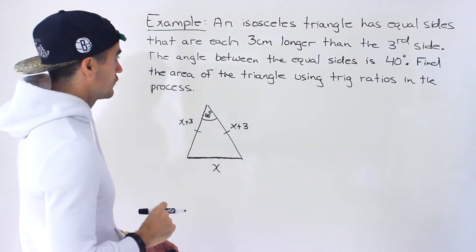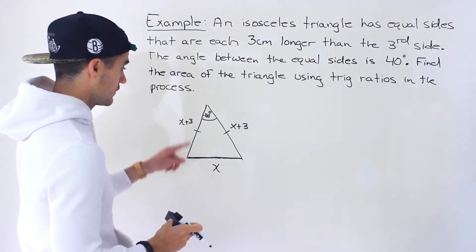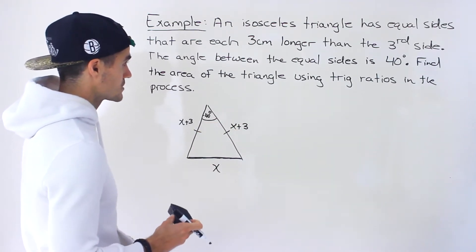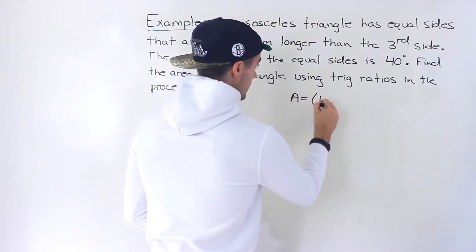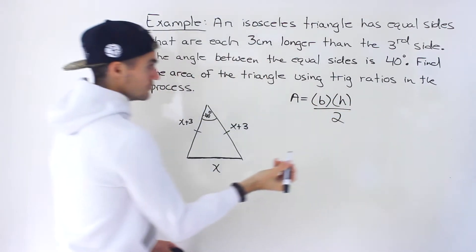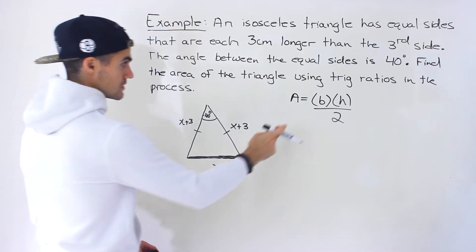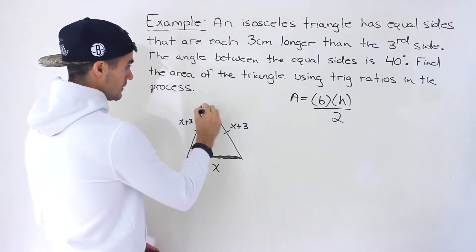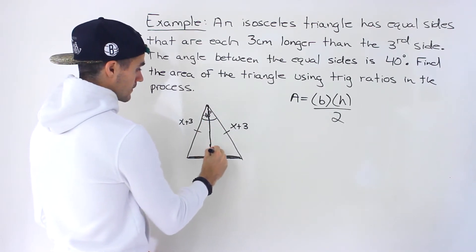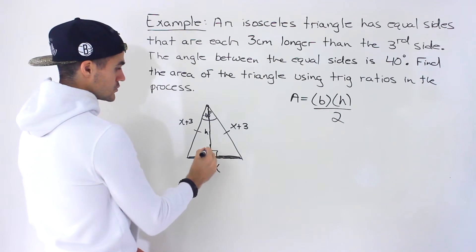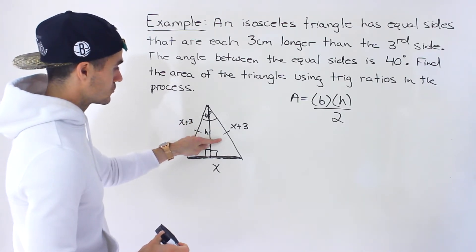Given that information, we have to find the area of this triangle. Notice we're not given actual side lengths, so we'll have to solve for x. In general, the area of a triangle is base times height divided by two. The base is the x side, and to find the height we draw an altitude from the top vertex down to the base.